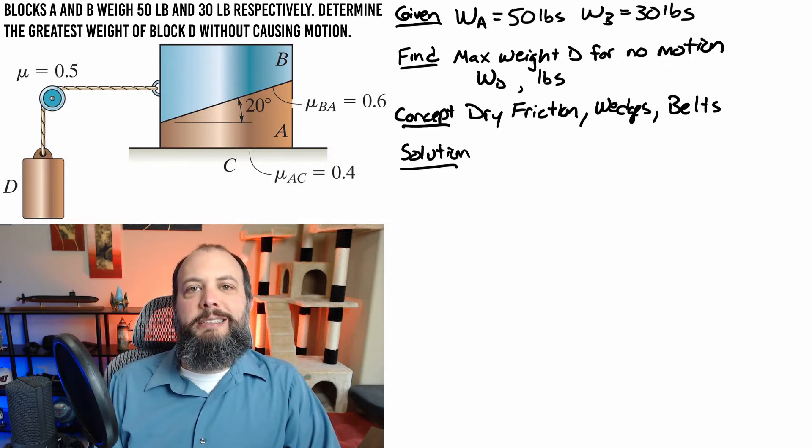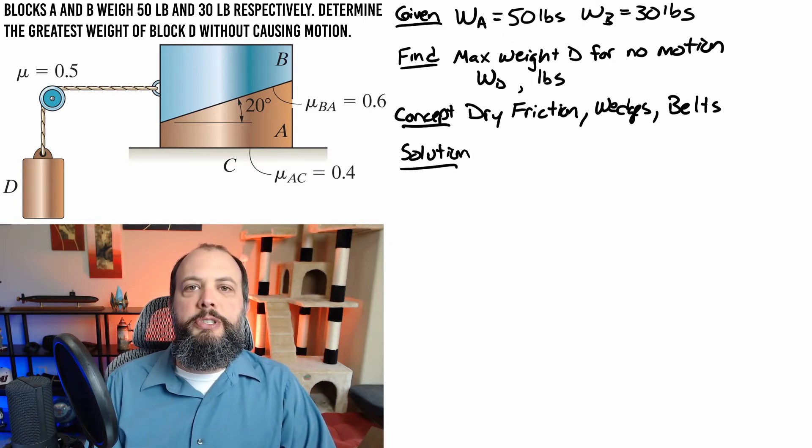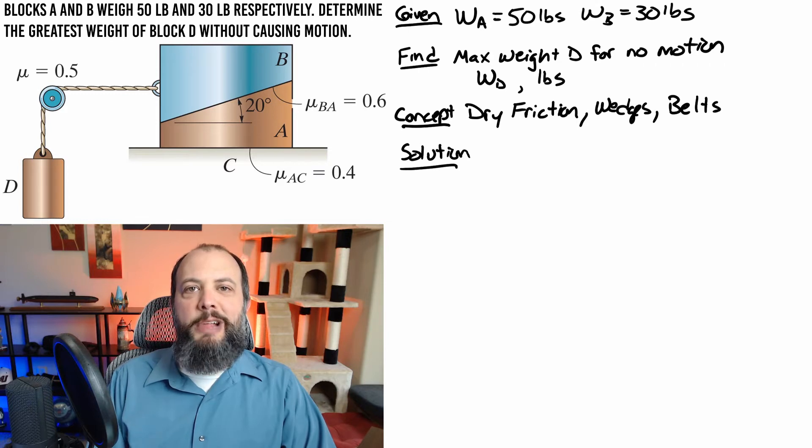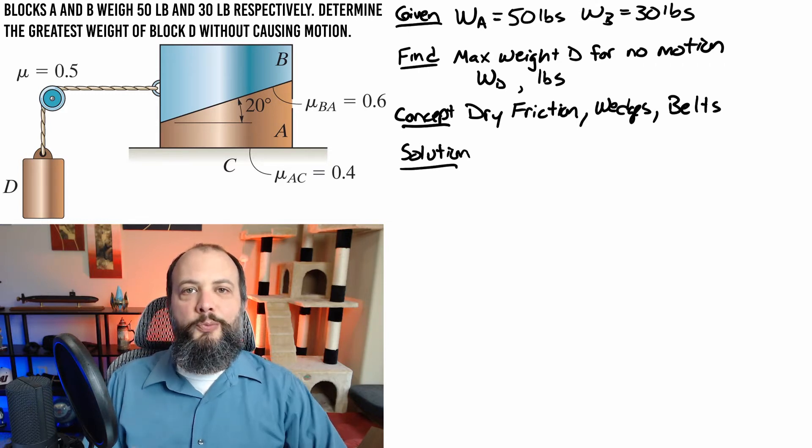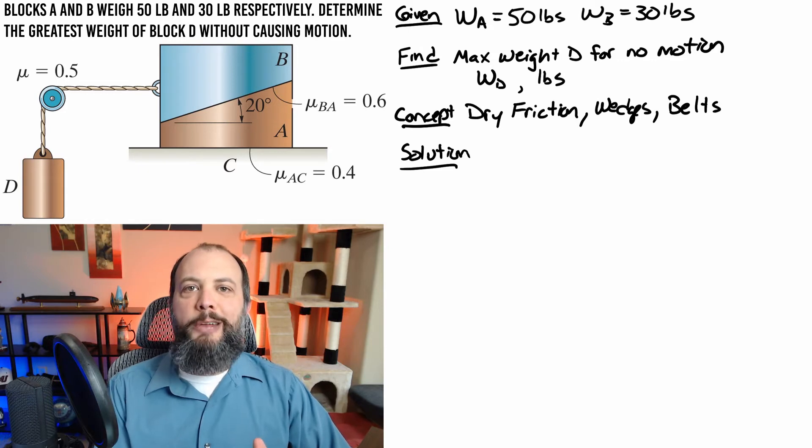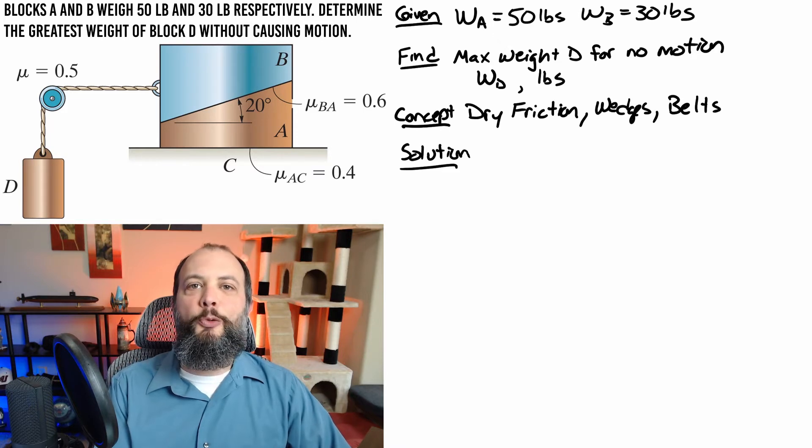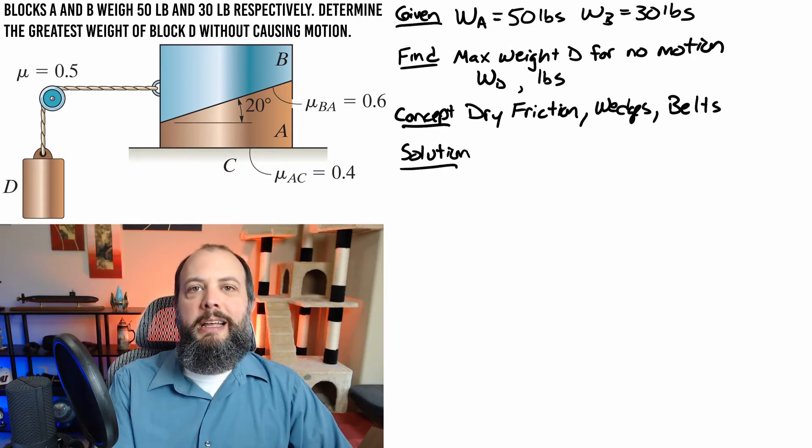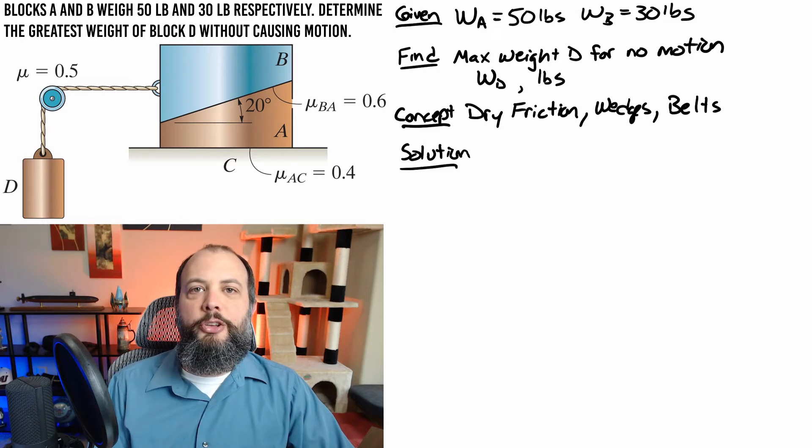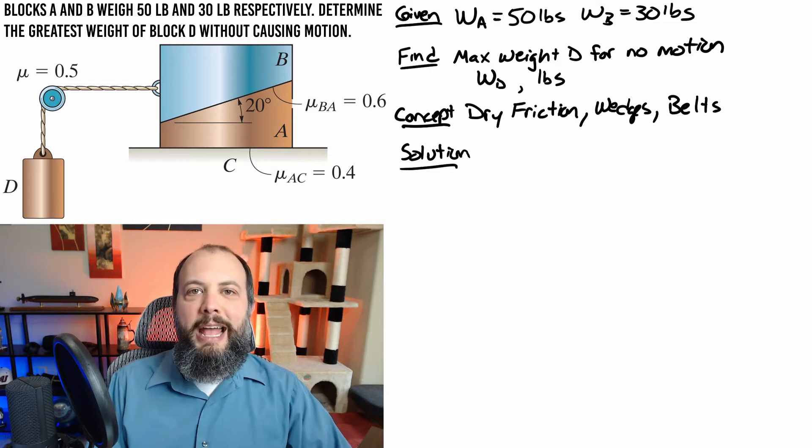This problem asks for the maximum weight where motion would not occur. This is actually the exact same problem as if it had been phrased the minimum weight where motion will occur. If there's one specific weight where it will just barely start moving then essentially a fraction just tiny bit less than that is the maximum weight where it would not be moving. So those two values essentially converge at the actual instant where it switches from not moving to moving, and you would solve them both the same way.